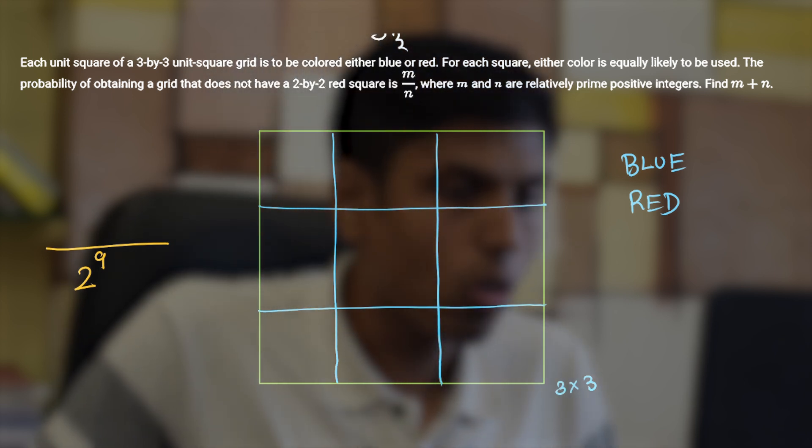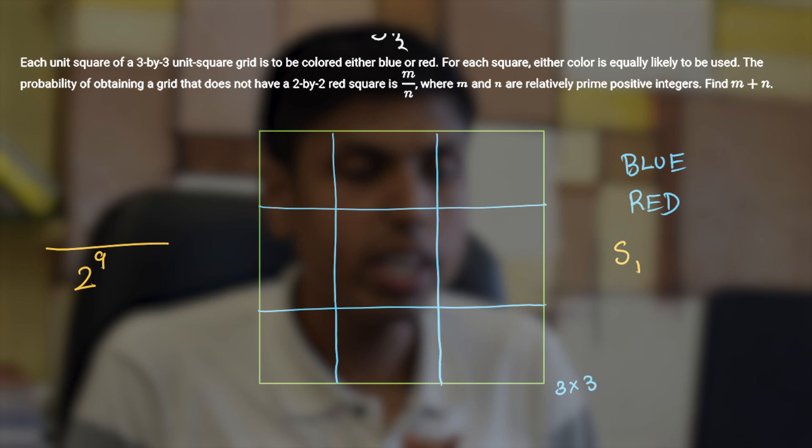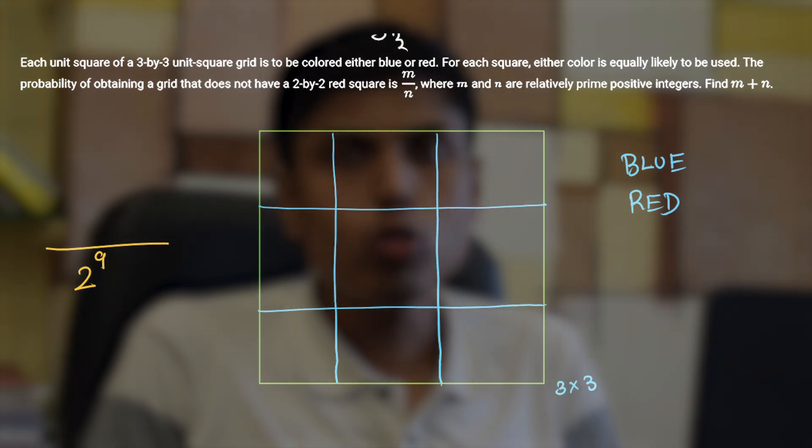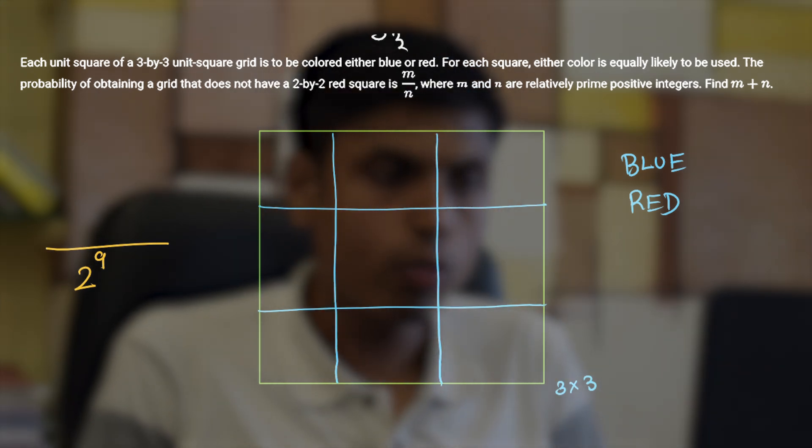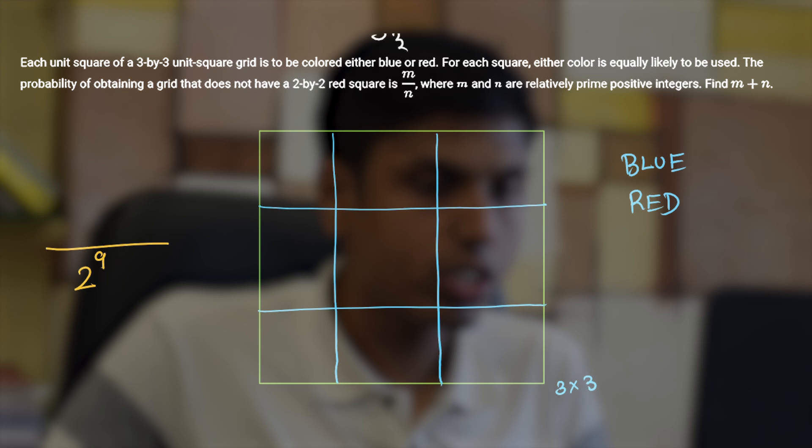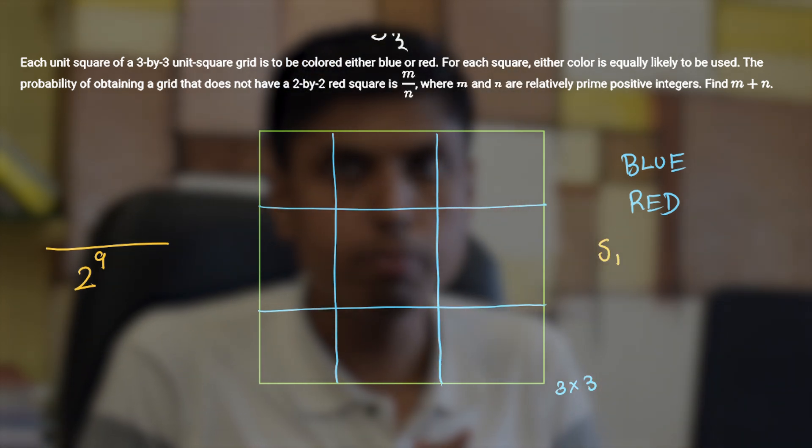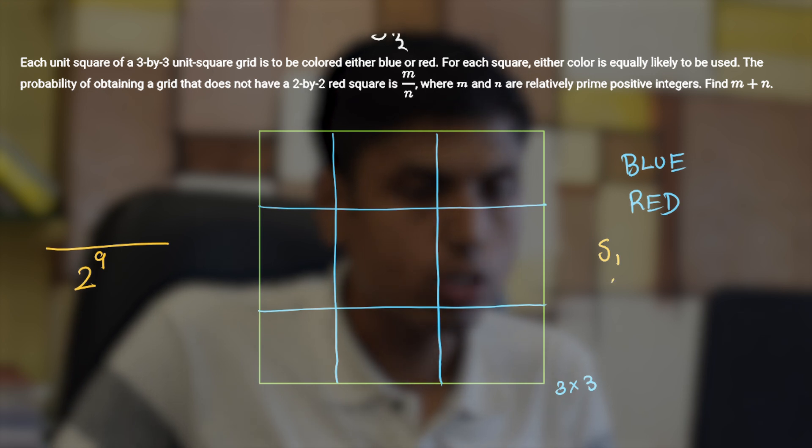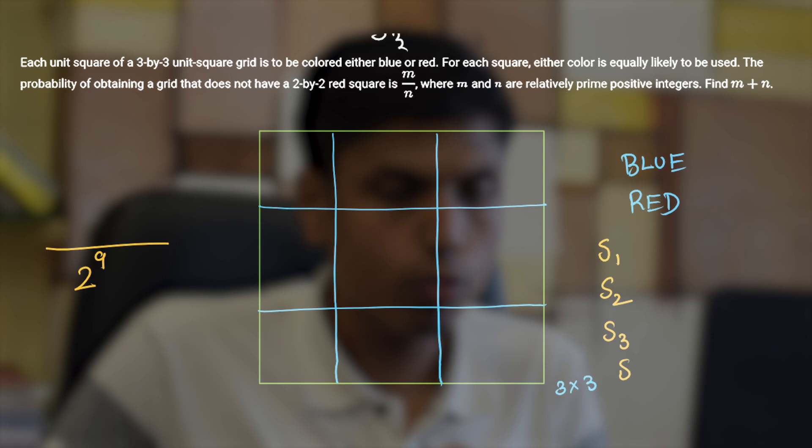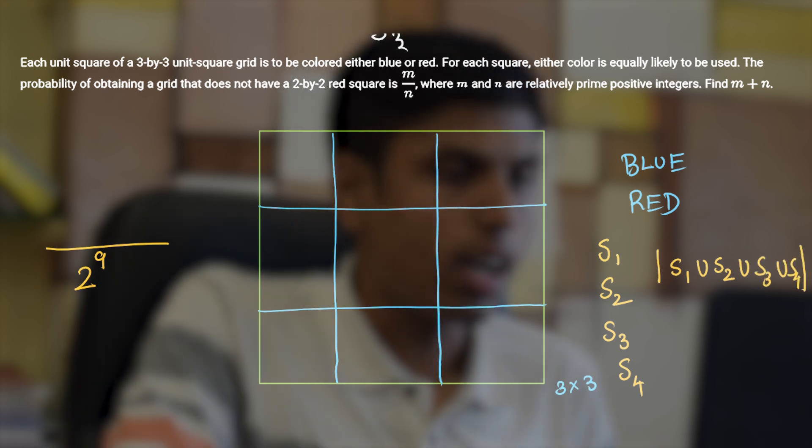So let's call the top left 2 by 2 square being red to be S1. Denote by S1 for the set of configurations with top left 2 by 2 square being red, and S2 for the top right, S3 for bottom left, and S4 for bottom right. So what we have to find is essentially cardinality of S1 union S2 union S3 union S4, that's it.